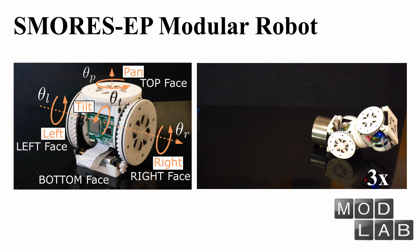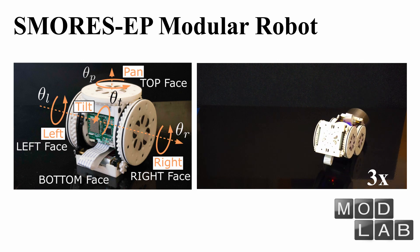Individual modules can also do differential drive locomotion using its left and right wheels.